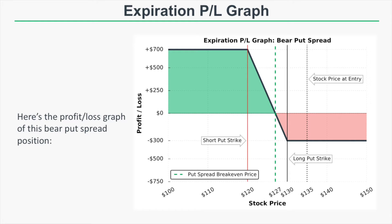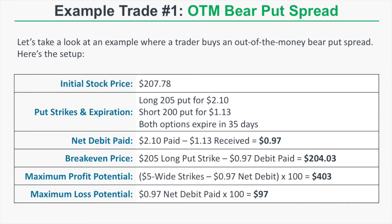Since we need the stock price to fall more than $8 to make any money, this spread has a lower probability of profit. If the stock price is anywhere above $130 at expiration, both puts expire worthless and we lose $300. If the stock is right at $127, the 130 put is worth $3 while the 120 put expires worthless — we break even. If the stock price is at $120 or below, the put spread is worth $10 and our profit is $700.